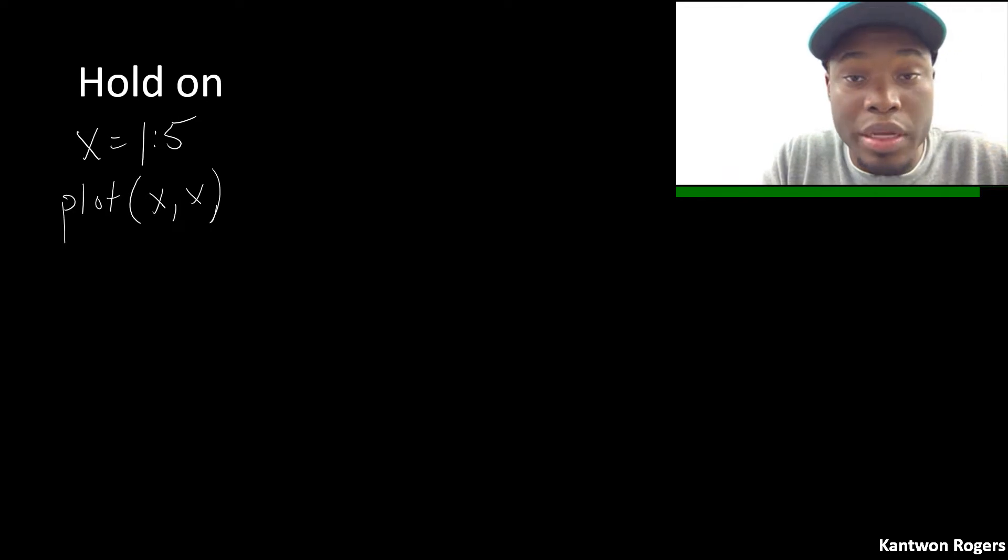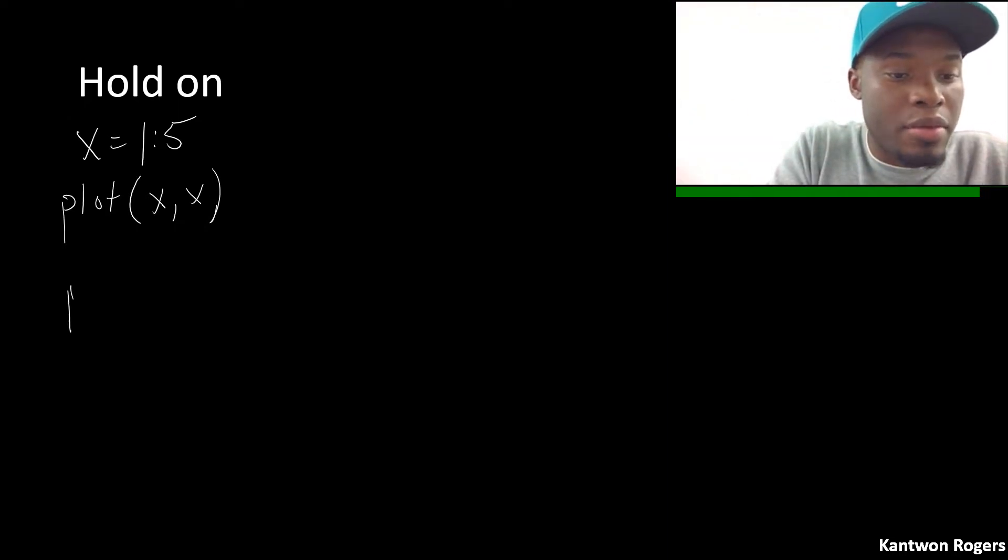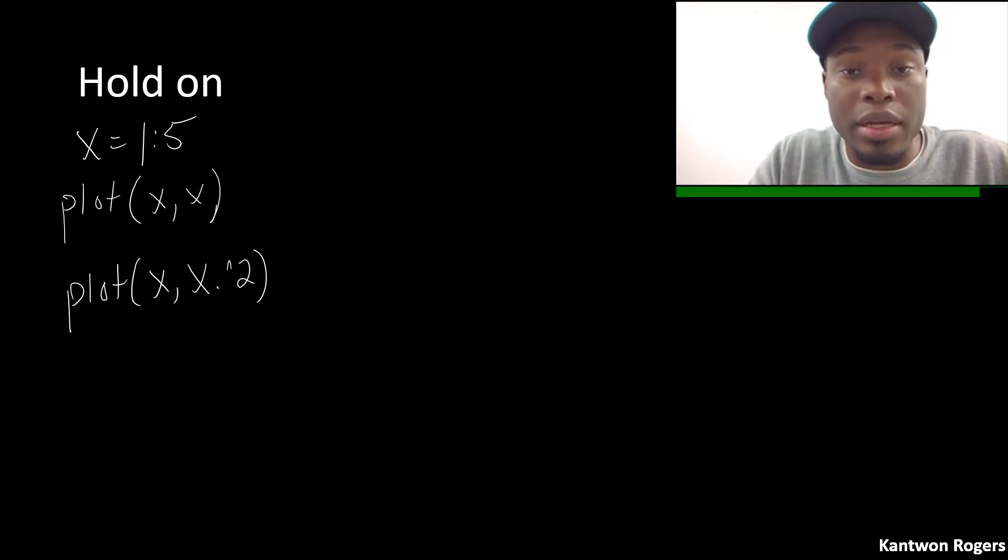So in this case here I'm just plotting a straight line where the y is also 1 to 5 and then let's say I want to then plot x and x squared. So in this case here I'm plotting x squared. My x's are just 1 to 5 and my y's are x squared.